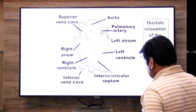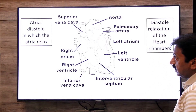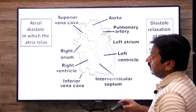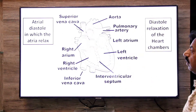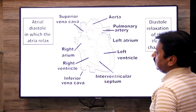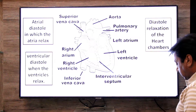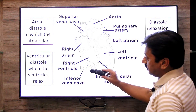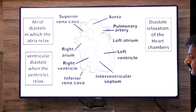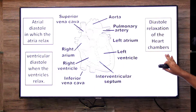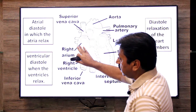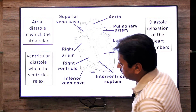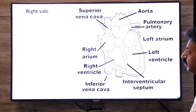If we talk about atria, the relaxation of the atria is called atrial diastole, in which the atria relax. And if we talk about ventricles, the relaxation of the ventricles is called ventricular diastole. So there are two types: atrial diastole and ventricular diastole. Now we start from the right side.